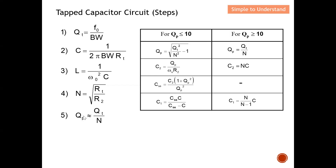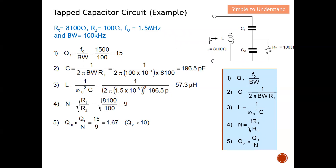Once QP is determined to be more or less than 10, we use the appropriate column to calculate C values. For this example, the total RT is 8100 ohms and R2 is 100 ohms — note that R2 must be smaller than RT. The resonant frequency is 1.5 megahertz and the bandwidth is 100 kilohertz. These five essential steps are illustrated here to design the tapped capacitor circuit.